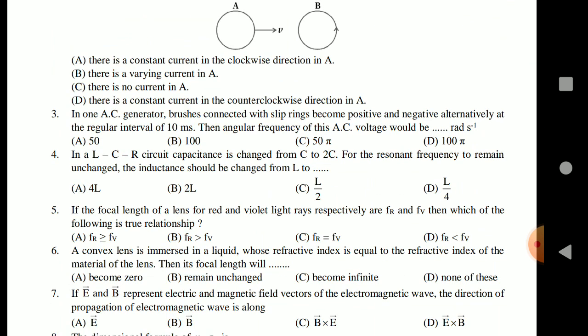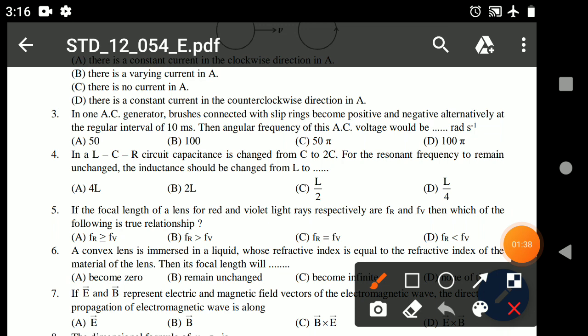Question number three: In which one AC generator, brushes connected with slip rings become positive and negative alternately at the regular interval of 10 milliseconds. Then angular frequency of this AC voltage would be? The answer is 100.